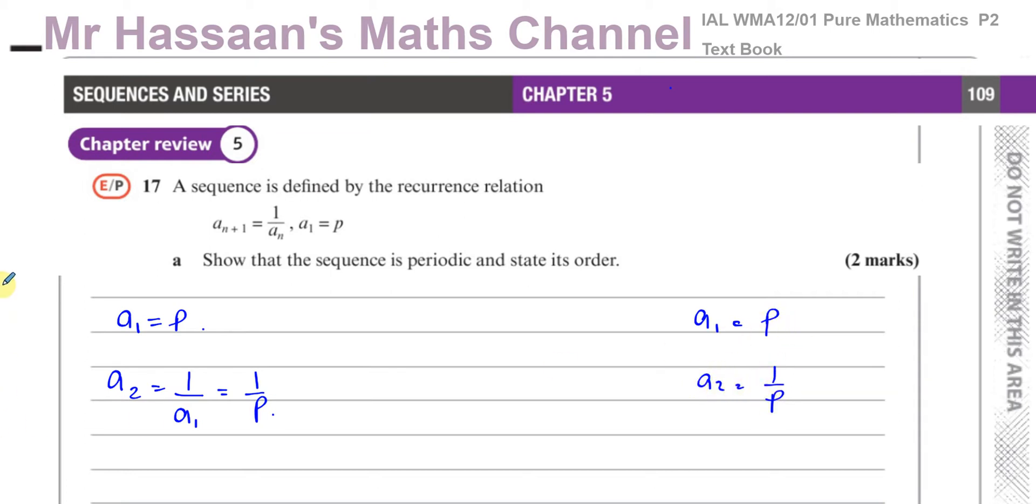Let's see what the third term is going to give us. You're going to have a_3 equals 1/a_2, which is 1 over 1/p. If you think about that, that's 1 divided by 1/p, which is 1 times p/1, which is p.